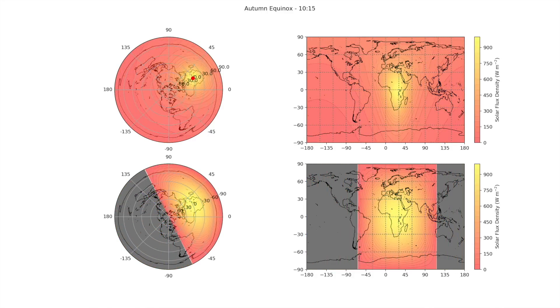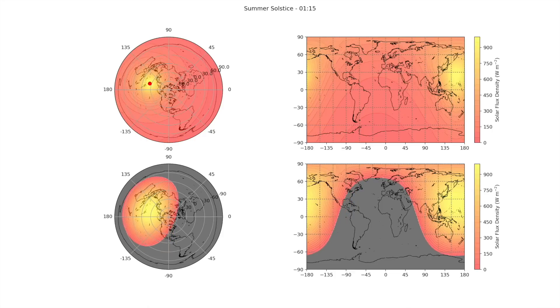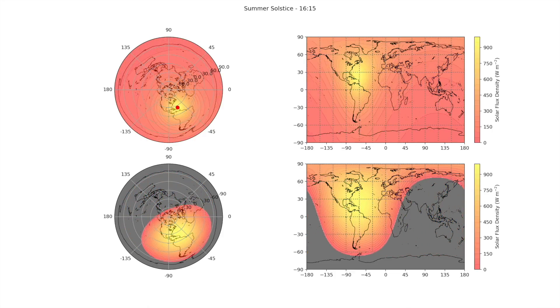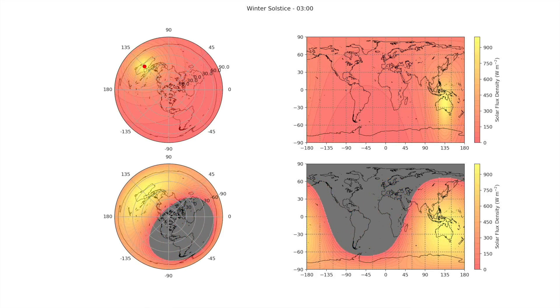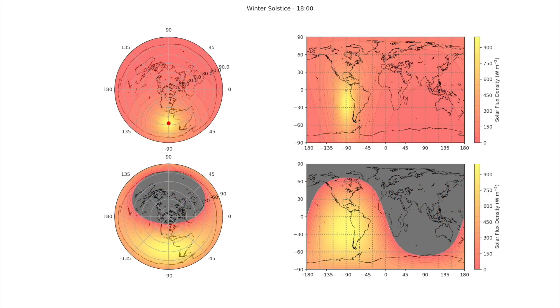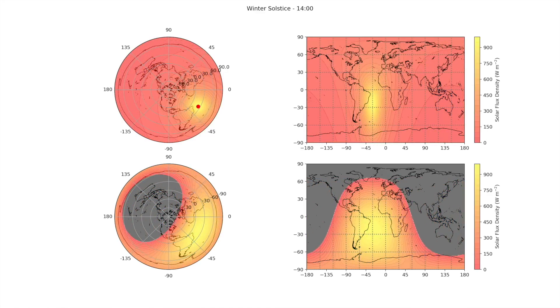Here we have an animation showing how the solar flux density develops through the day — first on the equinox, then on the summer solstice, and on the winter solstice. This is another way of demonstrating what we saw in the slices: on a flat earth it is never night, whereas on the globe exactly half the surface is lit up and the other half sees night. Nothing shown here is particularly surprising — this was presented purely to get you familiar with these plots.